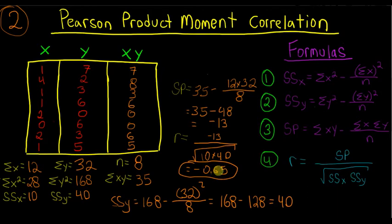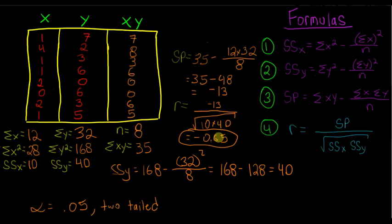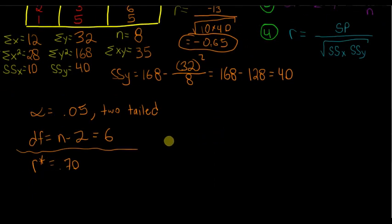But maybe this is just by chance. Maybe we got this strong relationship. It just so happened that these people just happened to have these two variables strongly related. They may not represent the rest of the population. So we want to find out, is this significant? And so I've wrote this out here already. Say we choose an alpha level of 0.05 and we're doing a two-tail test. We want to calculate our degrees of freedom. So degrees of freedom is equal to n minus 2, which is equal to 6.